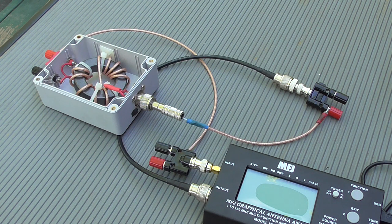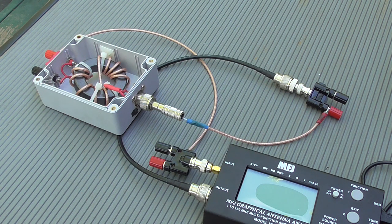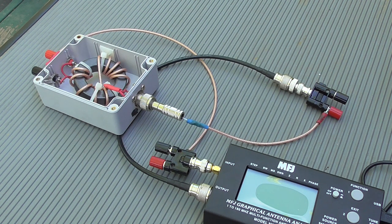VNAs generate a CW signal that the receiver component of the VNA, combined with some auxiliary software, allows you to measure the amplitude and the phase of the signal after it leaves your device.